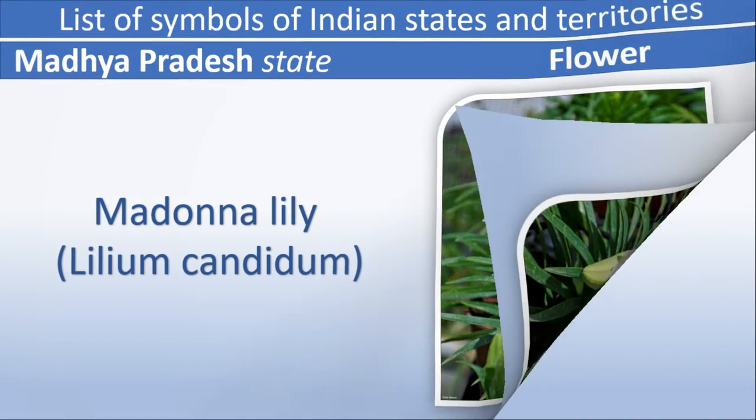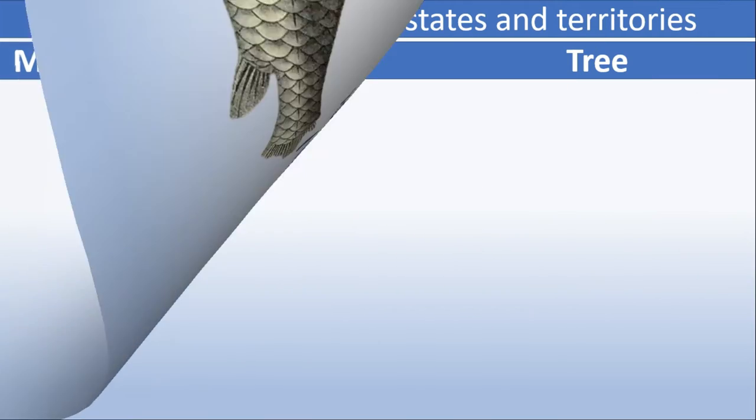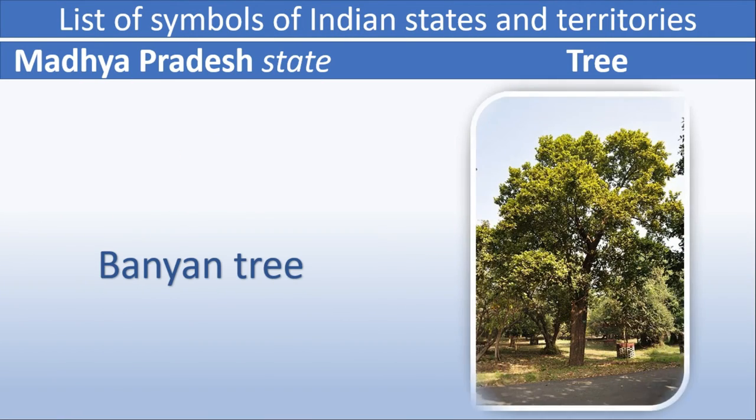Madhya Pradesh fish: Mahasheer. Madhya Pradesh tree: Banyan Tree.